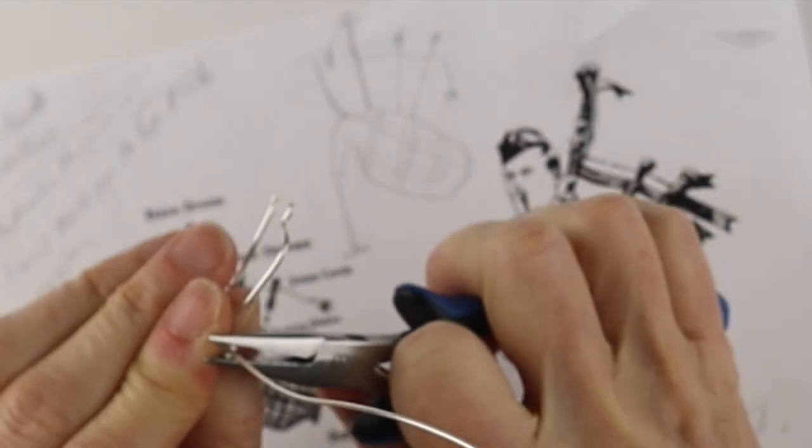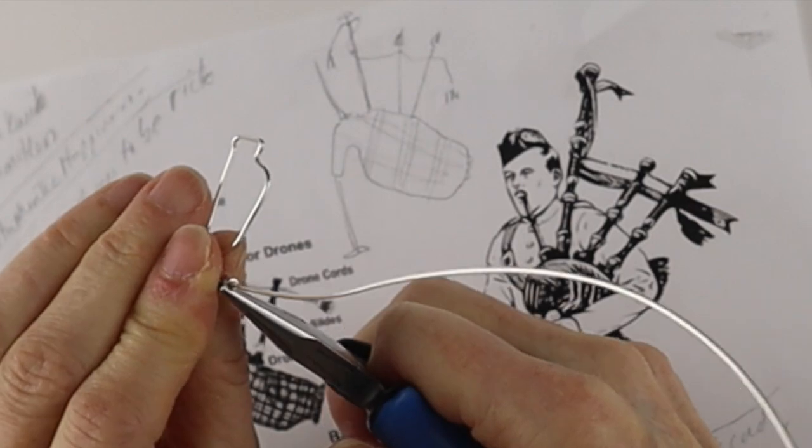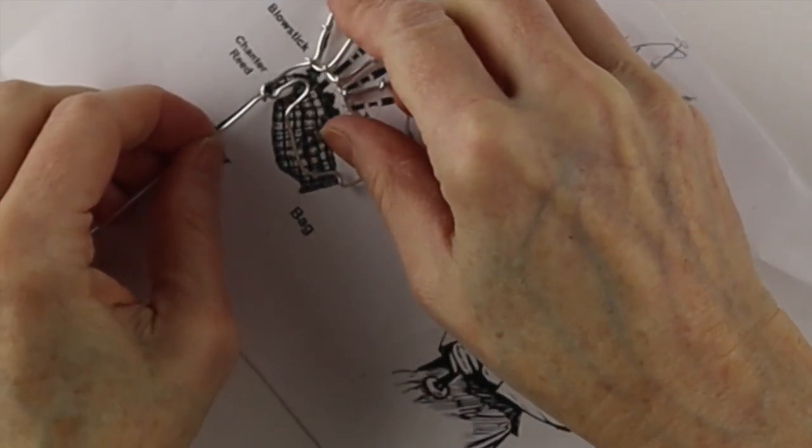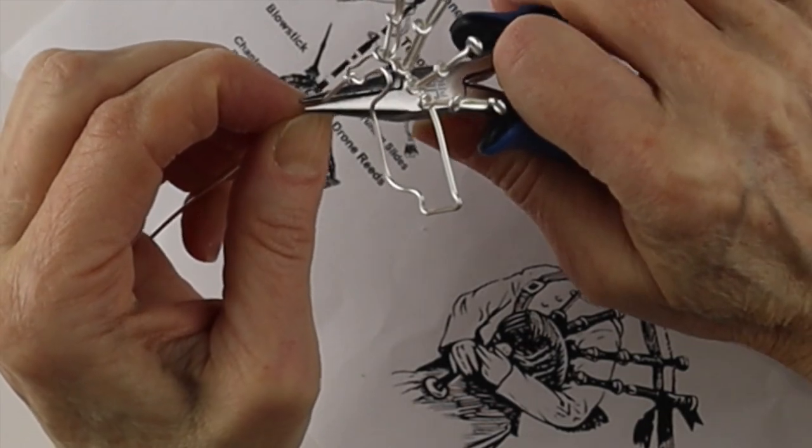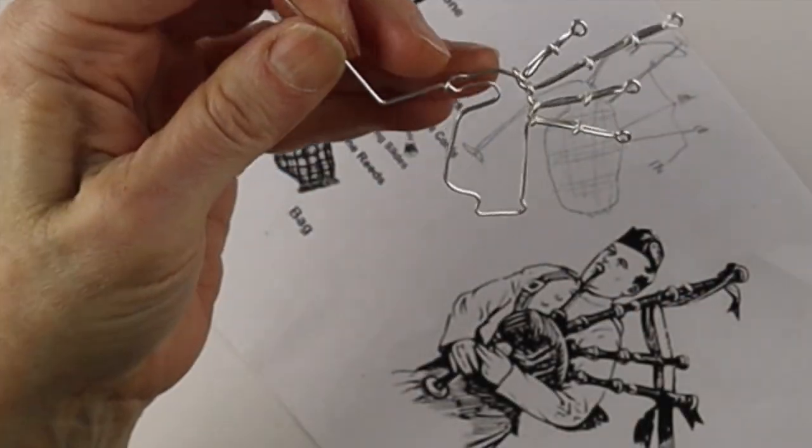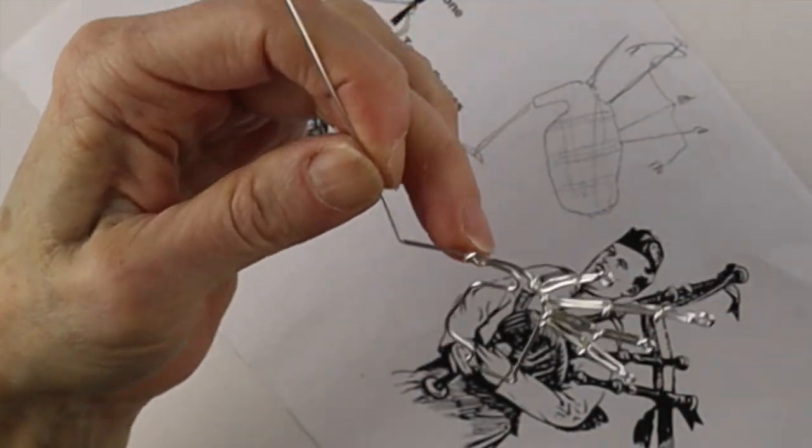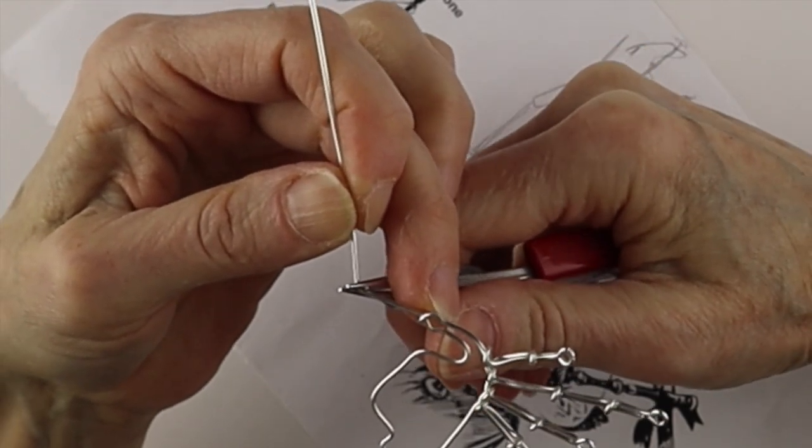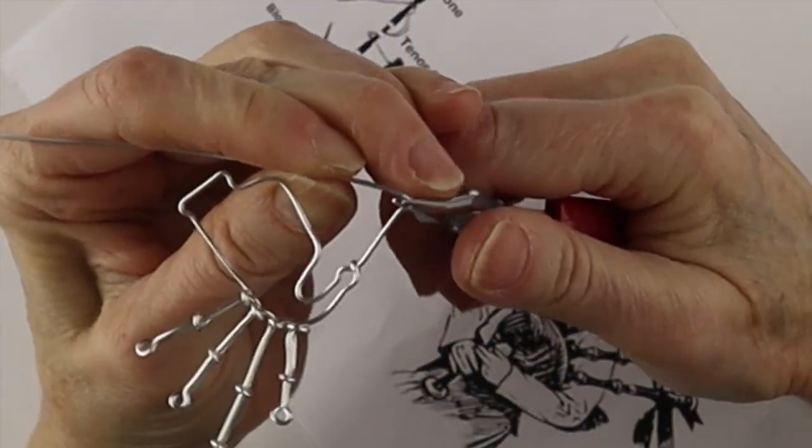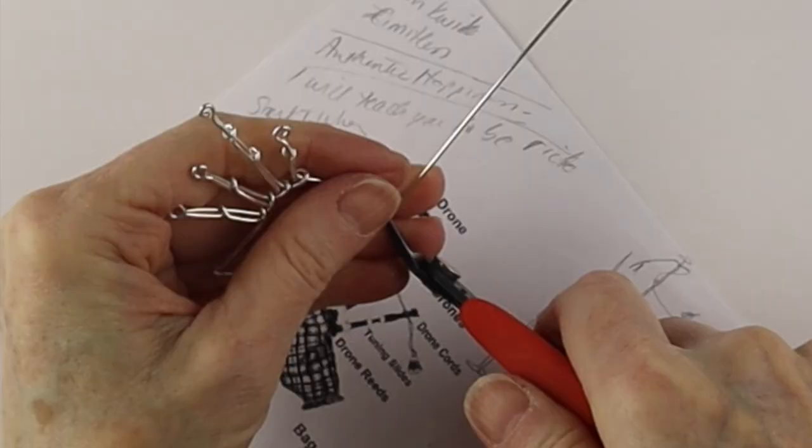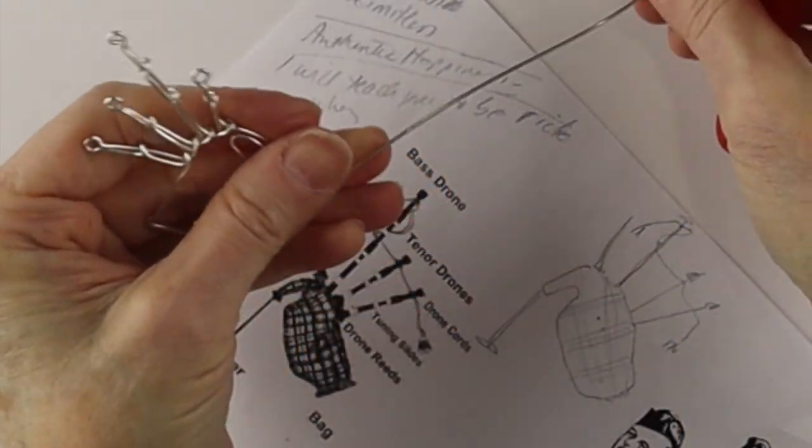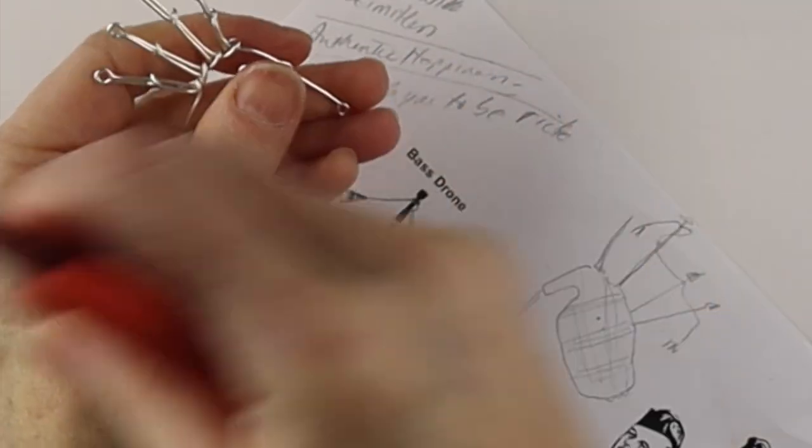Now we just have the one wire sticking down that will be the chanter. We'll measure it, I'll bend the end, and I'm just going to do a little loop on the end to finish it off. We just need to finish that end and then we'll clip it off, remove the end.